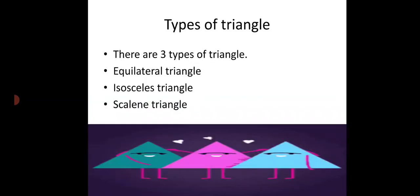Types of Triangle: there are three types of triangle — Equilateral Triangle, Isosceles Triangle, and Scalene Triangle. Triangle کی three types ہیں: Equilateral، Isosceles، and Scalene.